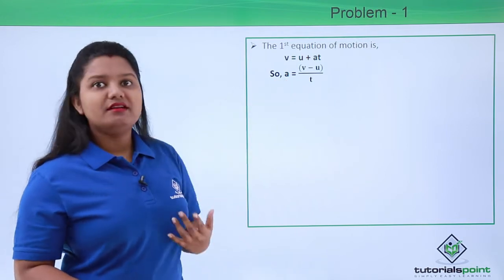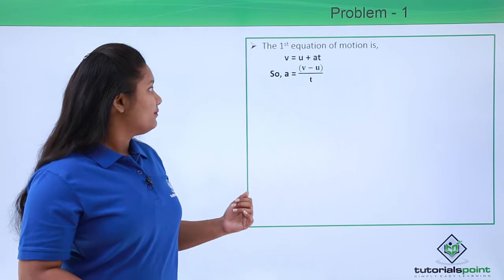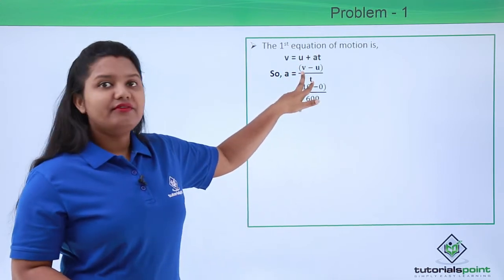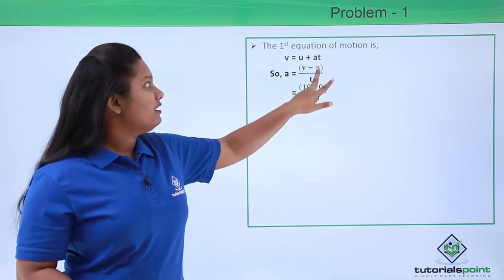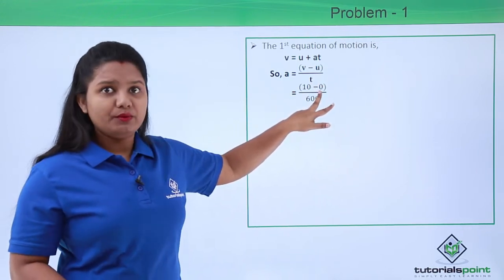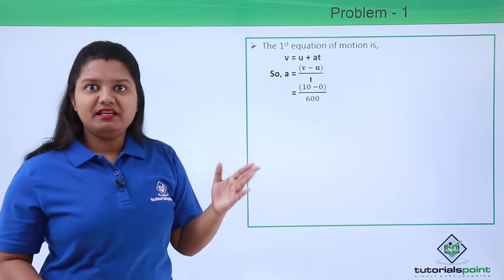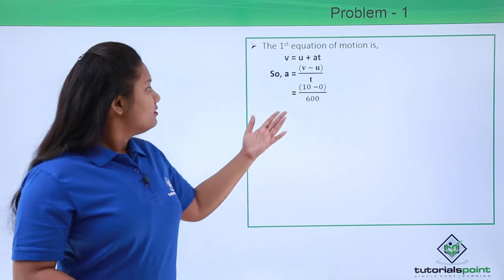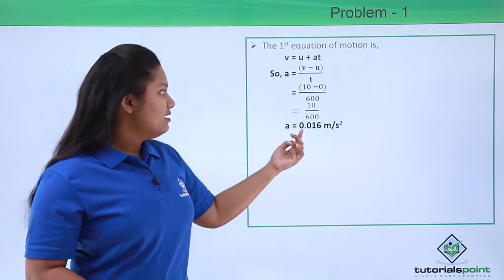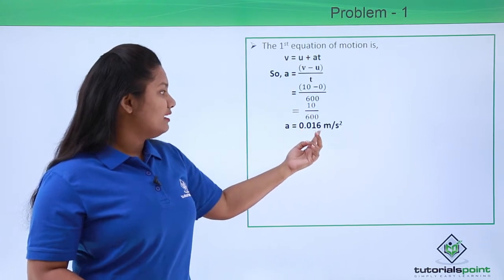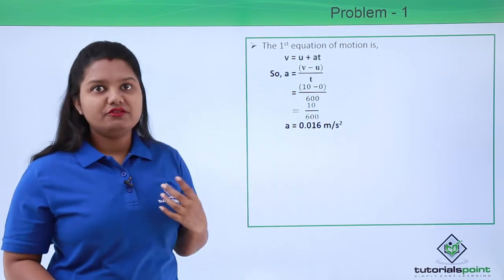With this expression we can directly find the value of acceleration. The final velocity is 10 meters per second after conversion, initial velocity is zero, and the time taken is 600 seconds after converting 10 minutes. On evaluating this we get the value of acceleration to be 0.016 meters per second squared. This is the acceleration of the train.